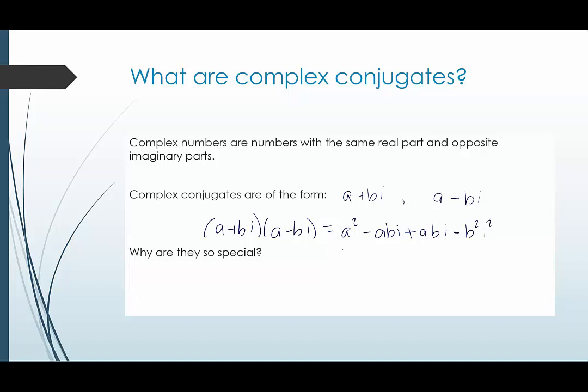Cleaning this up, we would have a squared. This would cancel with that. And then we have minus b squared times i squared, but i squared is equivalent to negative one. So this would be negative one times negative b squared, which ends up being positive b squared.